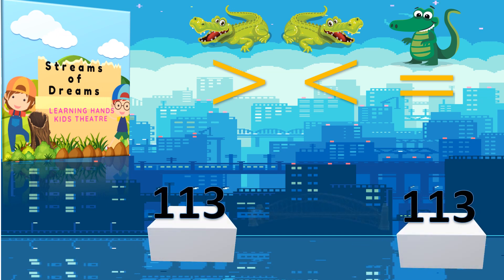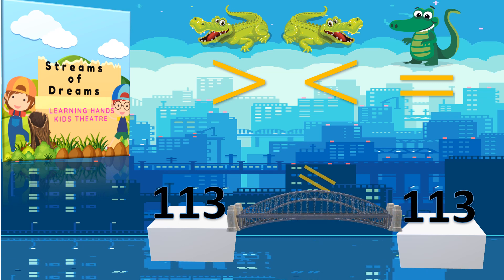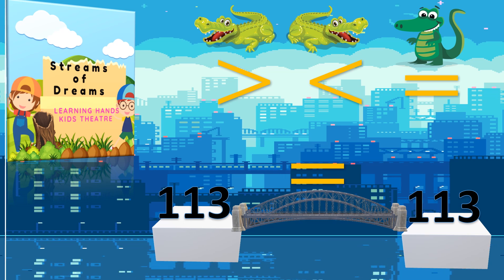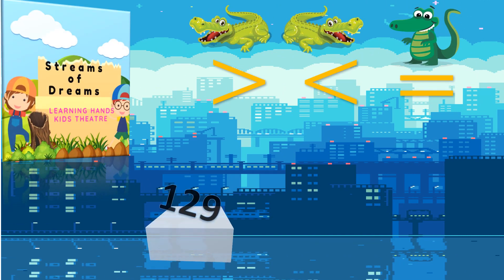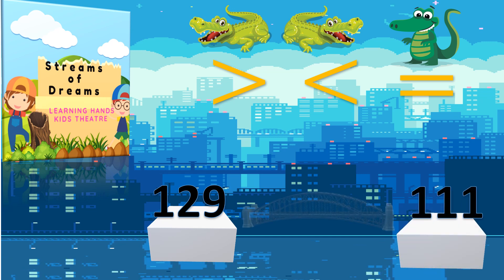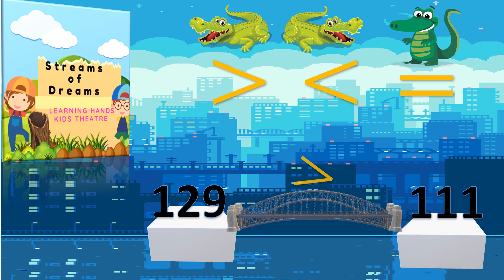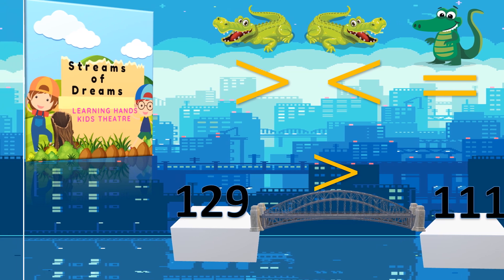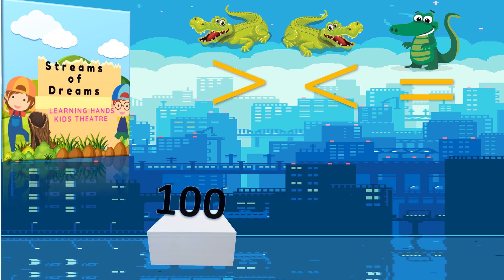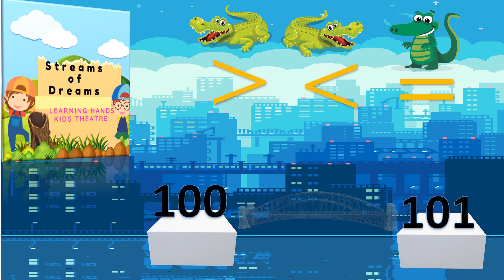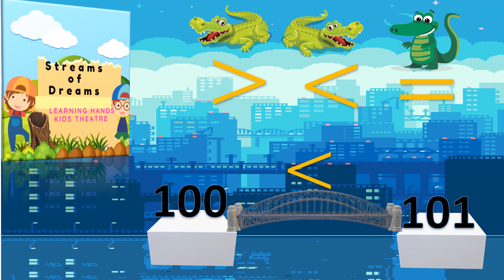113, and another plank has 113 across the bridge. Very nice — both the numbers are equal. Next: 129, and across the bridge I have 111. Yes, the alligator will go and eat 129. Now: 100, and across the bridge I have 101. It's forward counting and the big number is 101.